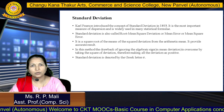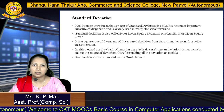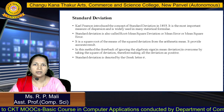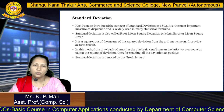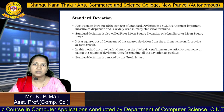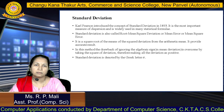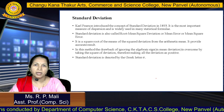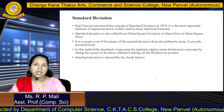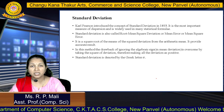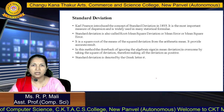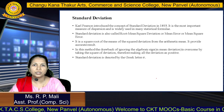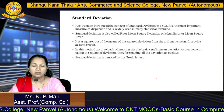Standard deviation is also known as root mean square deviation, mean error, or mean square error. It is the square root of the mean of the squared deviations from the arithmetic mean. It provides an accurate result. The drawback of ignoring algebraic signs is overcome by squaring the deviation, making all deviations positive. Standard deviation is also denoted by the Greek letter sigma.